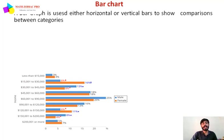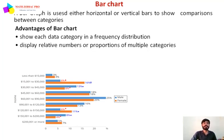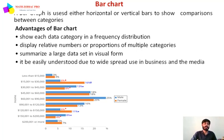Next is the bar chart. A bar graph uses either horizontal or vertical bars to show comparisons between categories. Advantages of a bar chart: it shows each data category in a frequency distribution, displays relative numbers or proportions of multiple categories, summarizes a large data set in a visual form, and is easily understood due to its widespread use in business and the media.